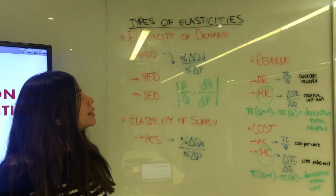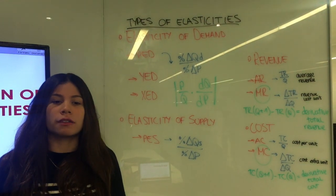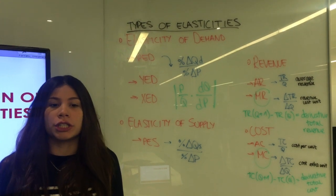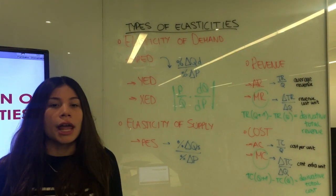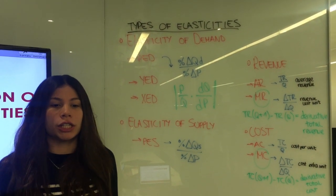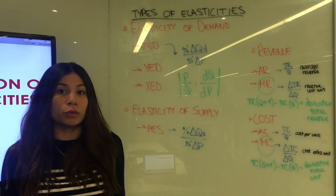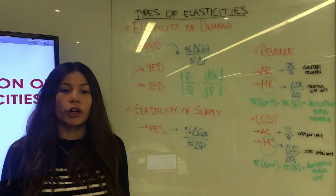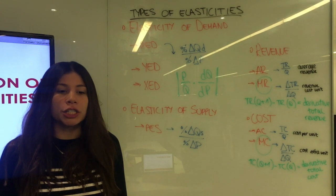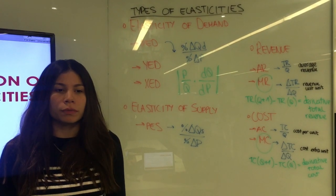What is elasticity? Elasticity refers to the degree of responsiveness in supply or demand in relation to changes in price. If a curve is more elastic, then small changes in price will cause large changes in quantity consumed. If a curve is less elastic, then it will take large changes in price to affect the change in quantity consumed.